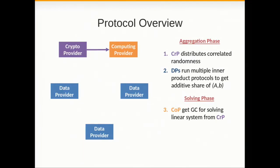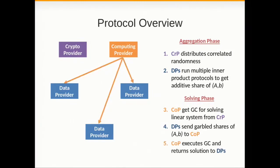The crypto provider will be the garbler, the computing provider is the evaluator who gets inputs in a secure way from the data providers, and then evaluates the circuit, returns encryption of the solution, the parameters of the model, and then the parties can decrypt the model with the help of the crypto provider. So this is it.